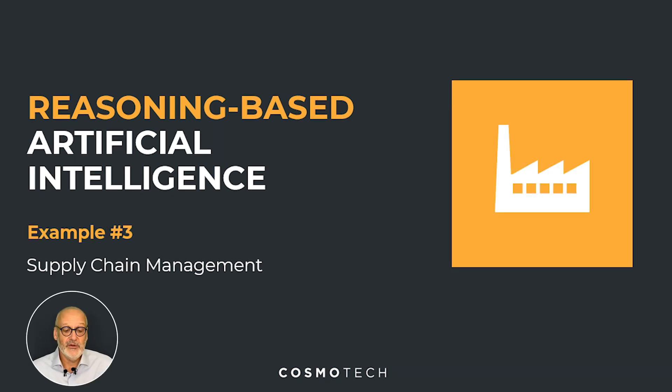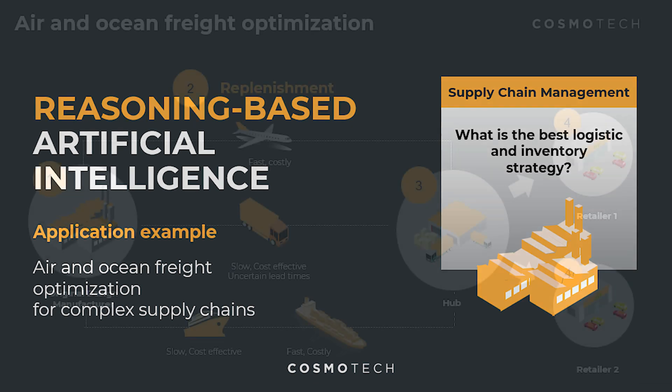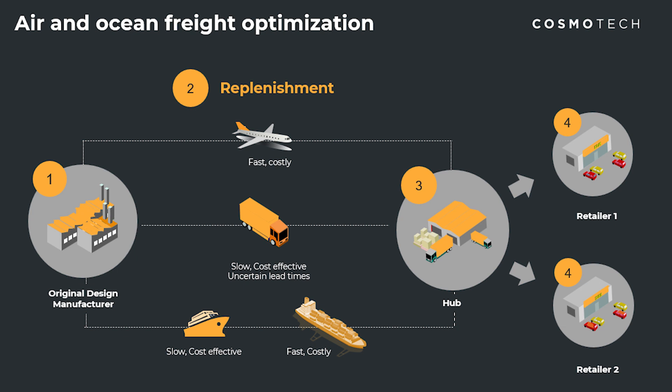Another example is in supply chain for industry. Assume you want to optimize your air freight and ocean freight. Air freight is much faster and gives high customer satisfaction, but it's much more expensive than ocean freight. You have a very complex system with your entire supply chain, and you have to do reasoning to find the best possible way to serve your customers while increasing profit and quality of service. There are AI systems that are able to do that, and they are based on reasoning.